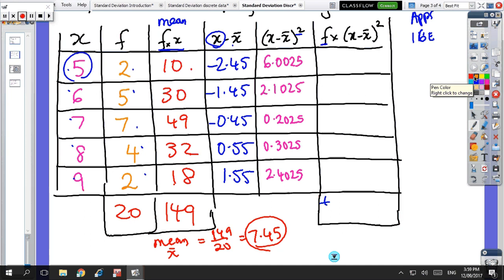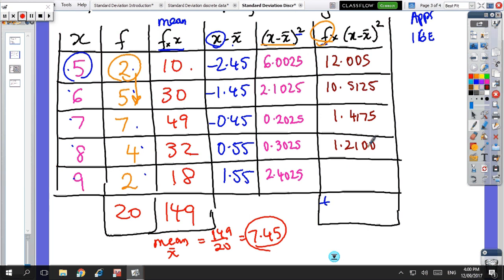Now, that's your x minus x bar squared. Now we have to multiply all those numbers by all of these frequencies. So I should have done that while I had the numbers up, so that's bad luck now. 2.5 times 2 equals, so I've got 12.005. 2.1025 times 5, I've got 10.5125. 0.2025 times 7, 1.4175. 4 times 0.3025, 1.2100, and 2 times 2.4025, 4.8050. So next time you do that, just multiply by f straight away while that number's still in your calculator. It'll save you a bit of time.